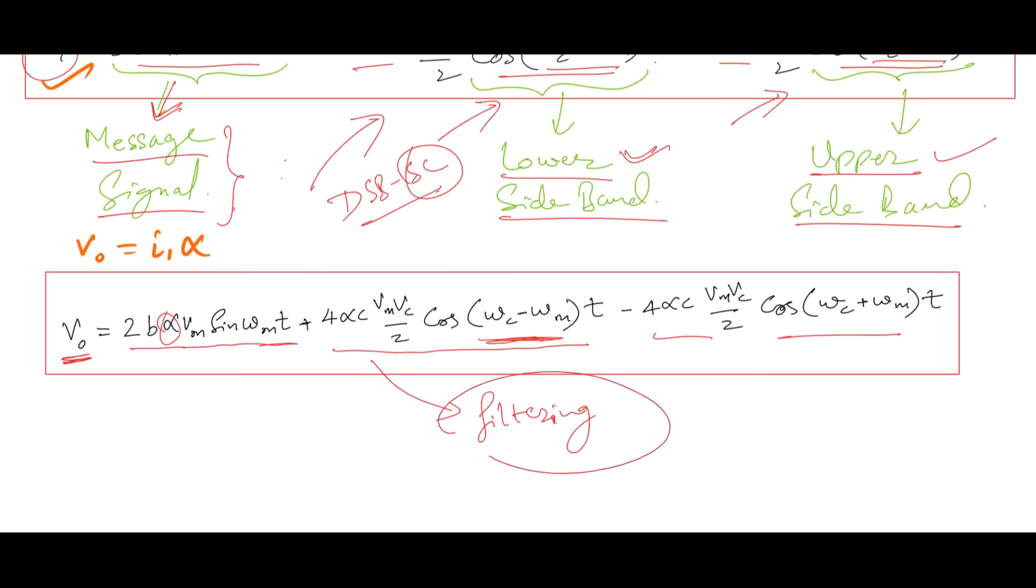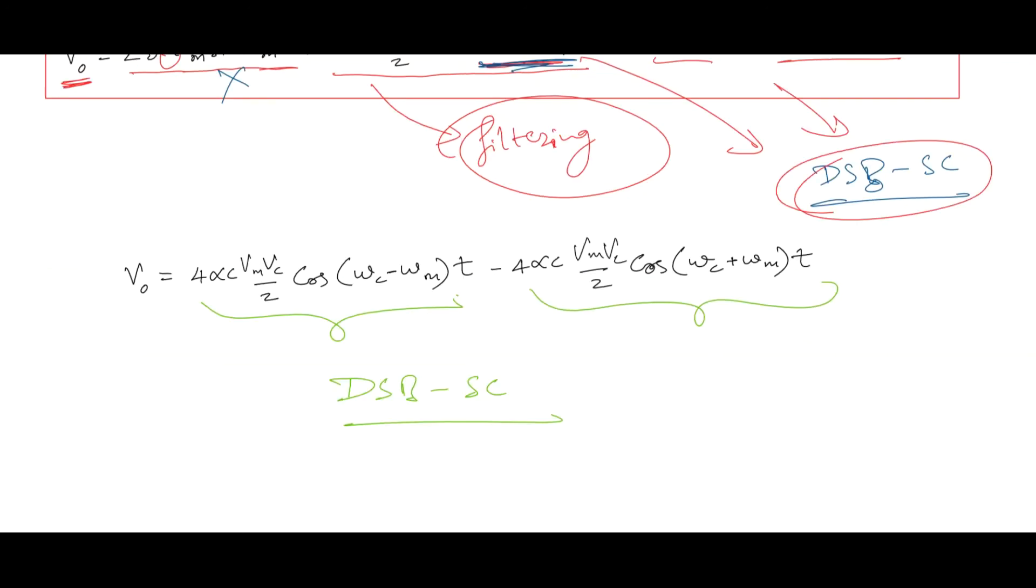Now the unwanted frequencies or components can be removed by filtering operation, means we will have only the desired components at the output. As this is a DSBSC system or DSBSC waveform we have to generate, that means only sidebands will be present, rest everything will be eliminated. So we will filter out this by using certain filtering operations, and the final modulated output voltage V0 will be consisting of only the lower sideband values and the upper sideband values, and carrier and other components will be fully eliminated or suppressed to some extent.